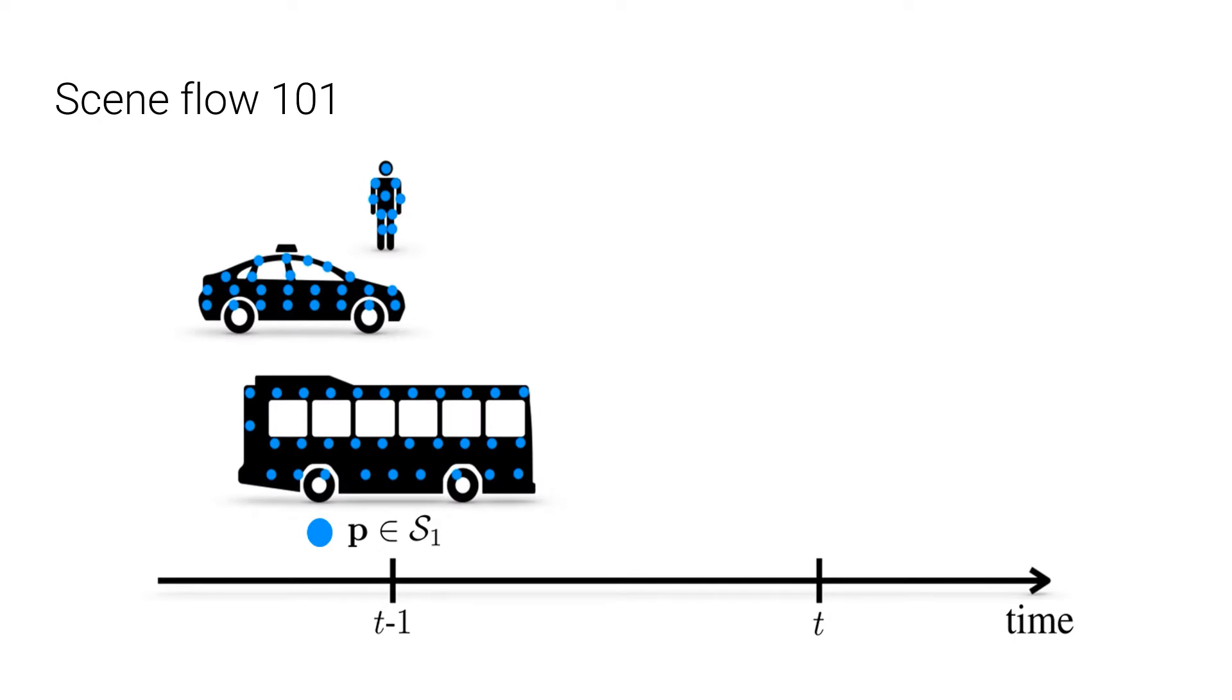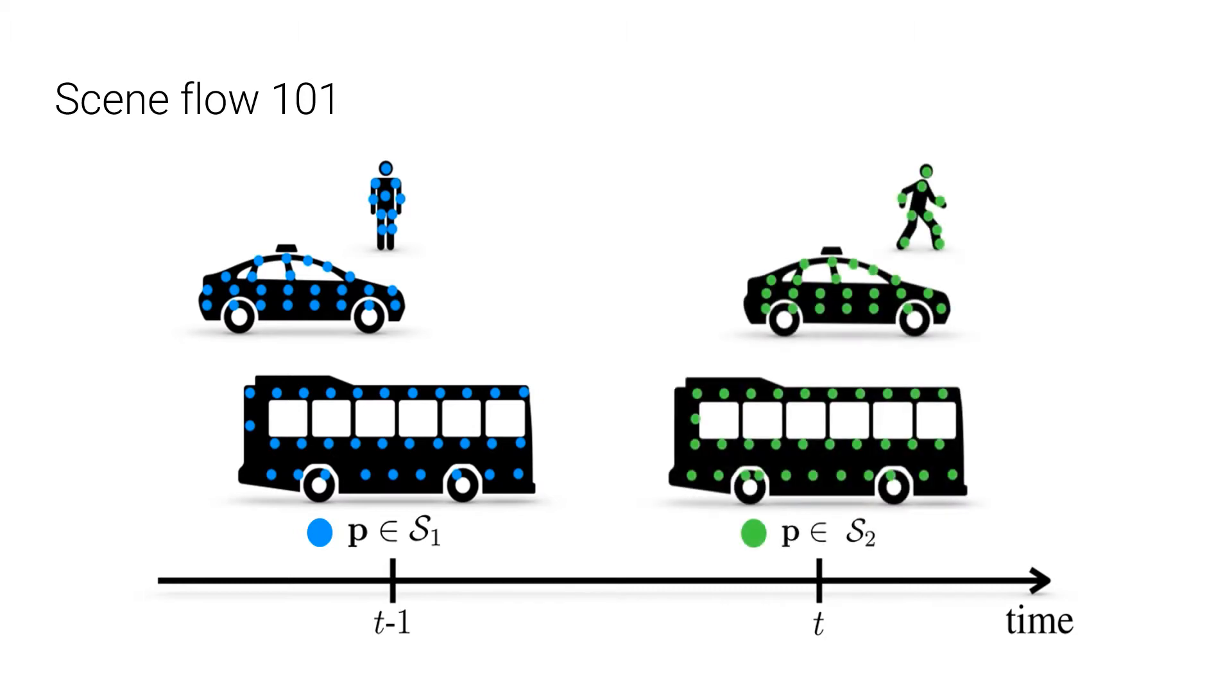Scene flow is the motion field of a 3D dynamic scene. Imagine we have a point cloud assembled from the surfaces of a scene using a lidar sensor at time t-1 as S1. And at time t, when things have moved a bit,